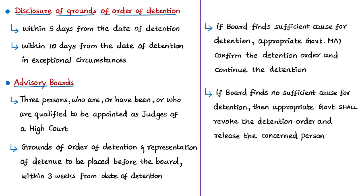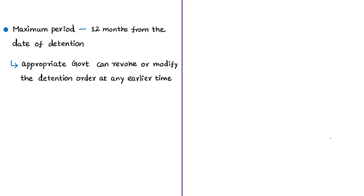If the advisory board reports sufficient cause for the detention, the appropriate government may confirm the detention order and continue detention for such period as it thinks fit. If the advisory board reports no sufficient cause, the appropriate government shall revoke the detention order and release the person. The maximum period of detention confirmed by the advisory board is 12 months from the date of detention, though the government can revoke or modify the order at any earlier time.